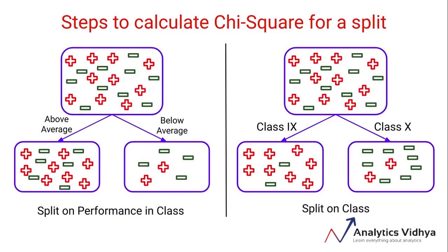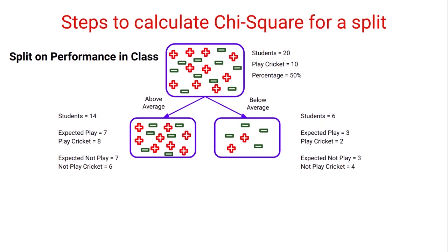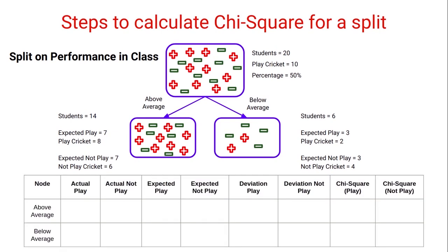Let's compare two splits: one on performance in class and the other on the class variable, and we'll compare their chi-square statistics. This is the split on performance in class with the actual and expected values we already calculated. Let's now create a table to calculate the chi-square values for this split on performance in class.